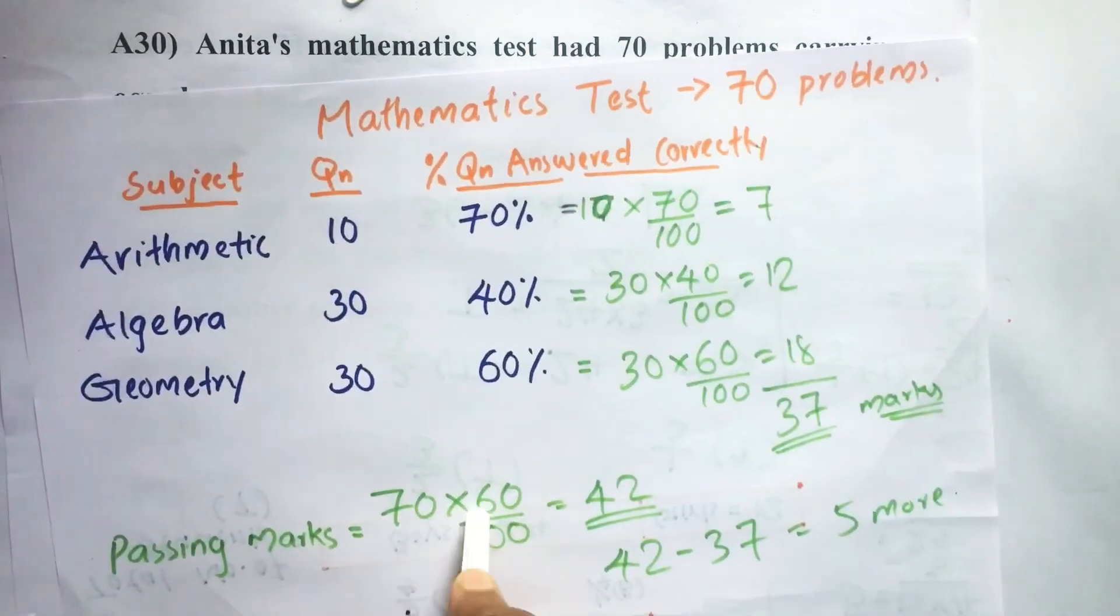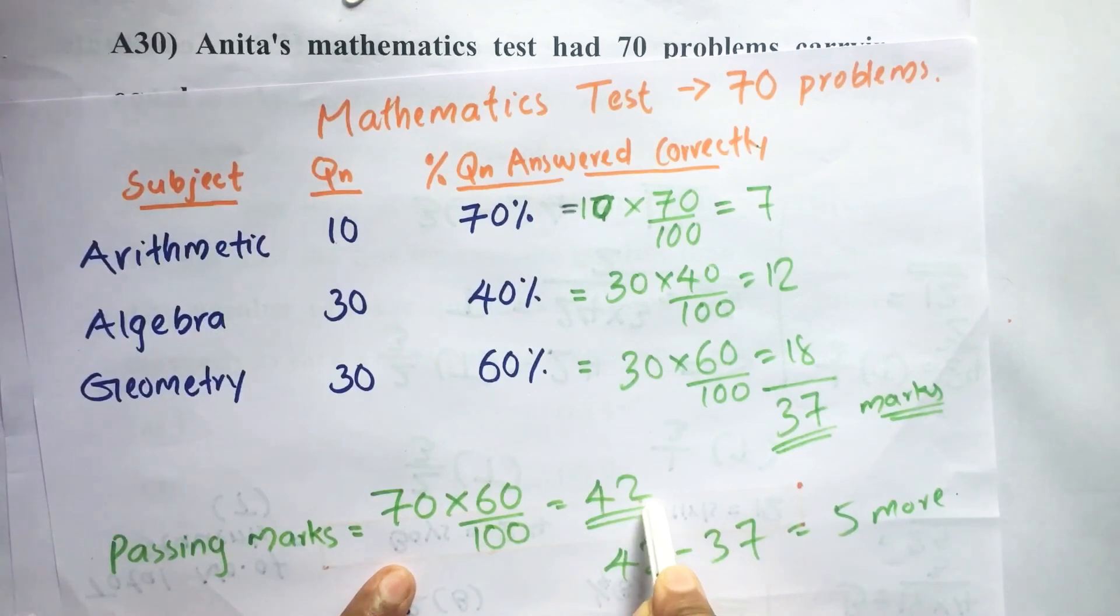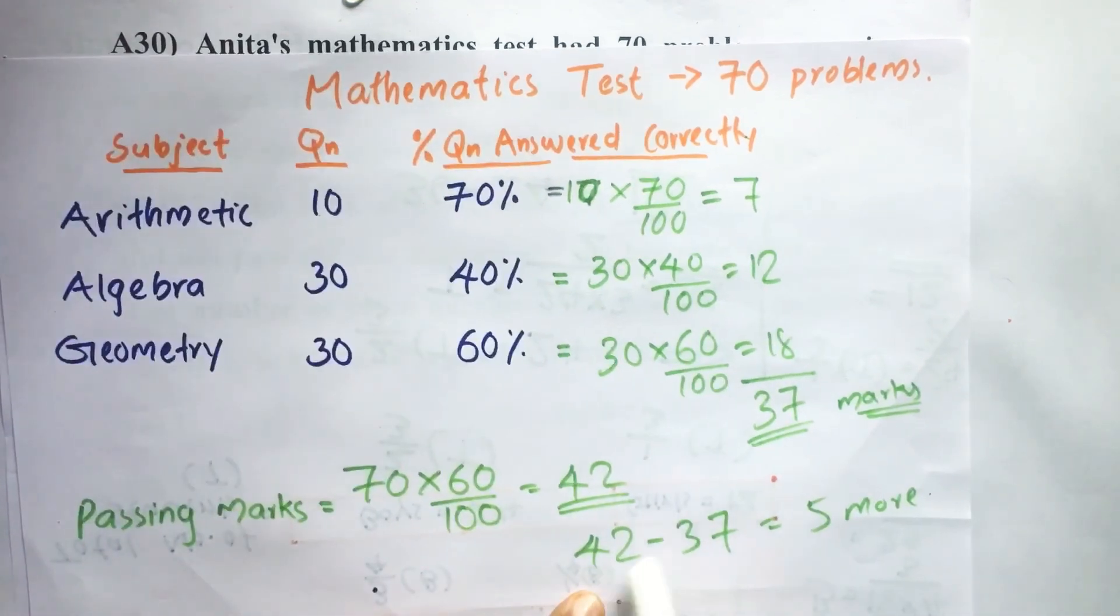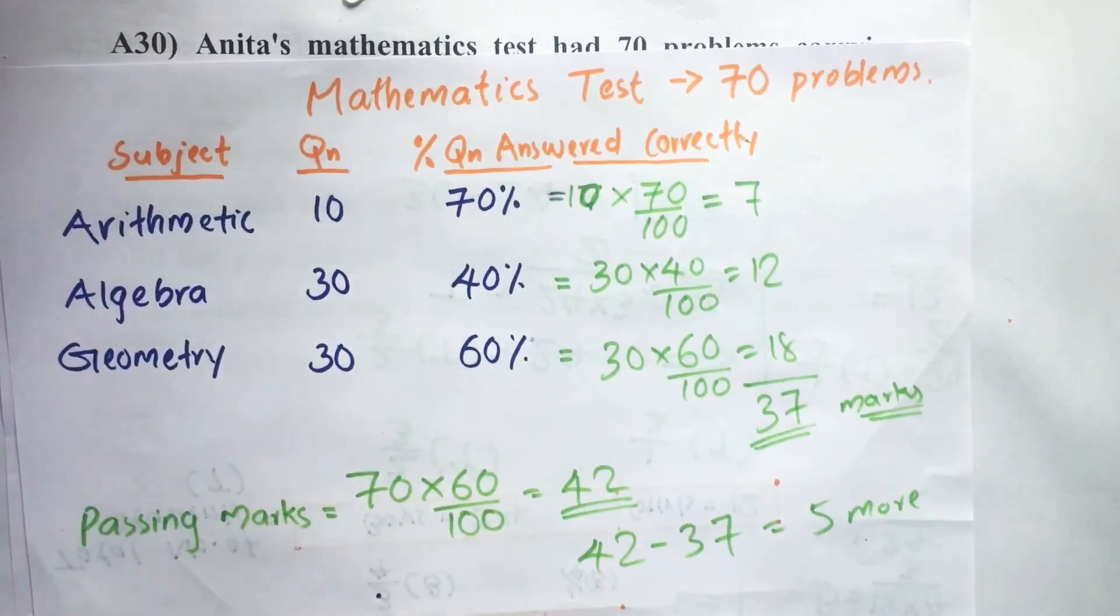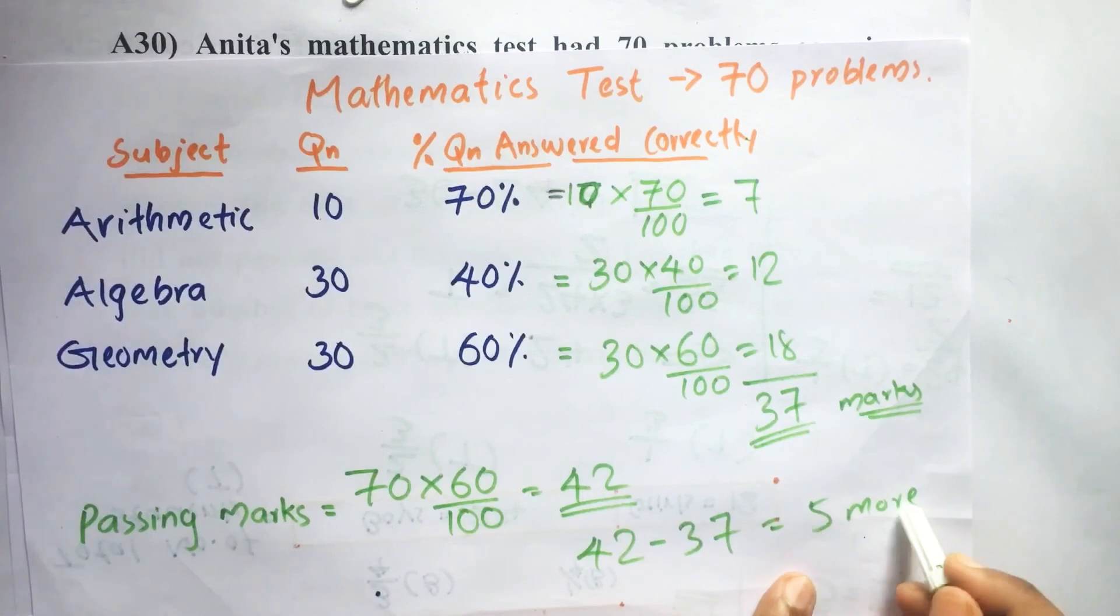Passing marks equals 60% of 70, which is 42. So 42 - 37 = 5 more. That means she would have passed this examination if she could solve 5 more questions.